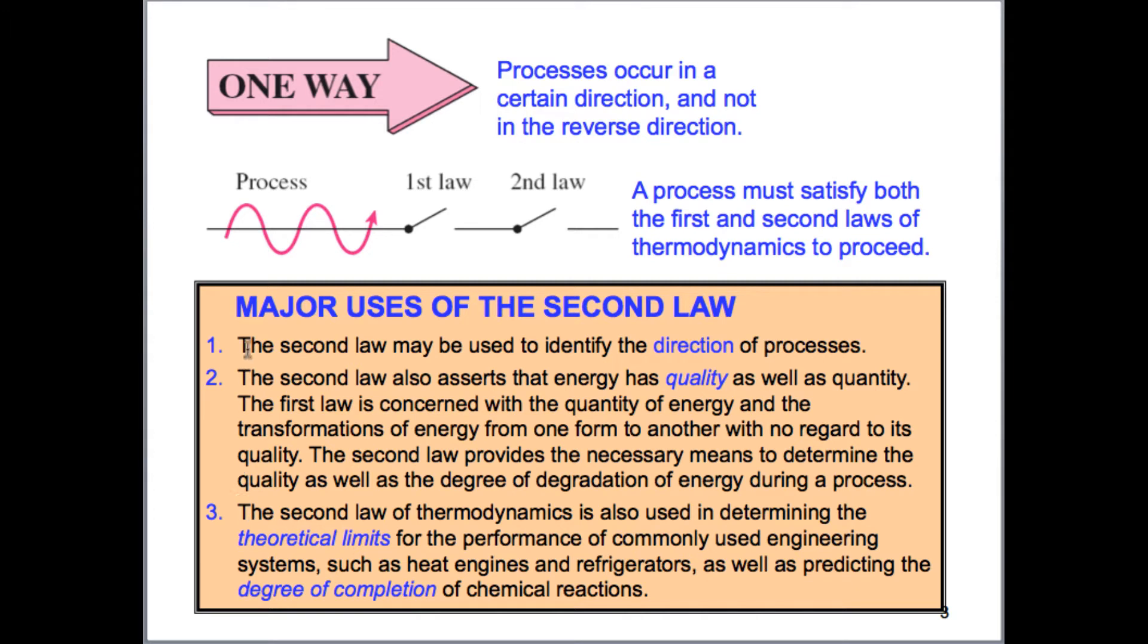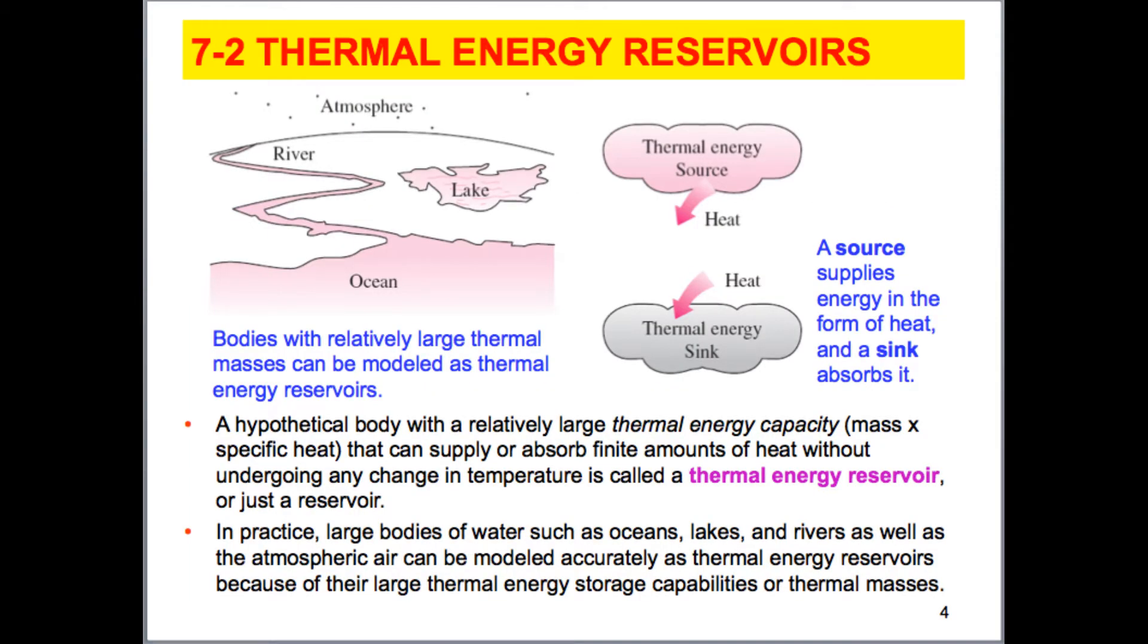The third deals with that there are theoretical limits to the performance of something to occur. For example, a heat engine is going to have a certain limit that it can operate between both a hot and cold reservoir. And I use the term reservoir here before defining it. Let me go ahead and define it in this slide.